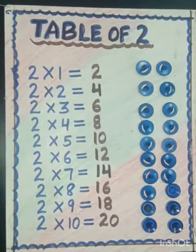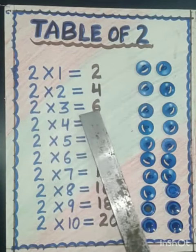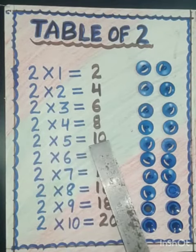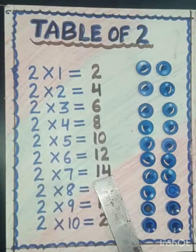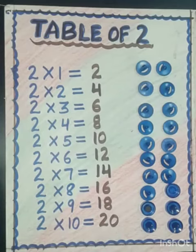So let's read the table of 2 again: 2 ones are 2, 2 twos are 4, 2 threes are 6, 2 fours are 8, 2 fives are 10, 2 sixes are 12, 2 sevens are 14, 2 eights are 16, 2 nines are 18, 2 tens are 20. So children, you will learn the table of 2 nicely. Thank you and have a nice day.